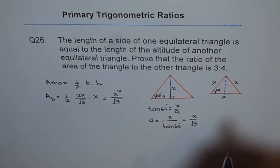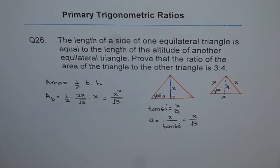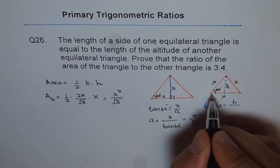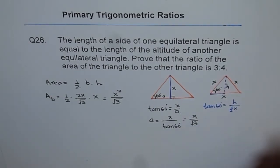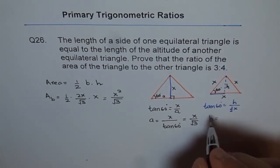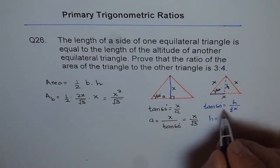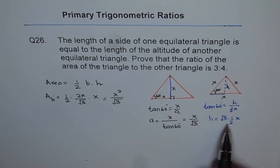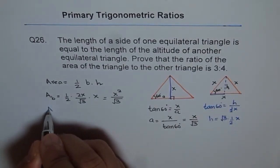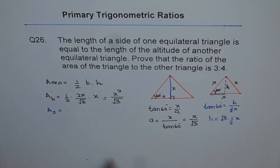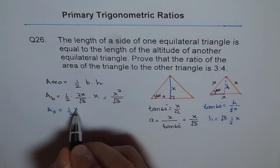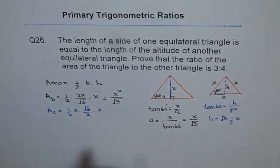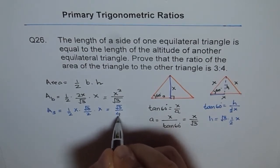Now let's solve the other triangle. Here we don't know the height, so let's find it using tan of 60 degrees. We get tan of 60 degrees equals height over half the base, and half of x is the half-base. Therefore h equals tan of 60, which is square root of 3, times half of x. So the area of the small triangle equals half times base x times height square root of 3 over 2 times x, which gives square root of 3 over 4 times x squared.